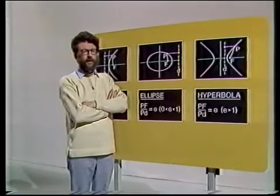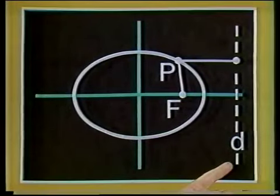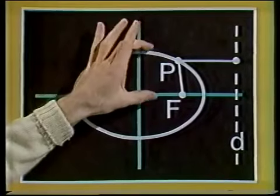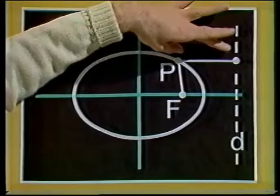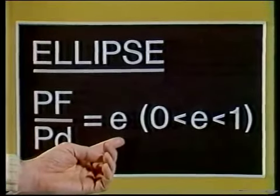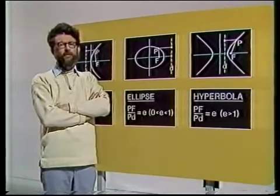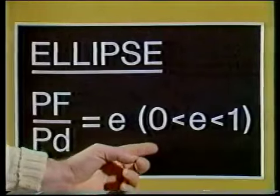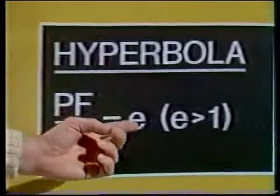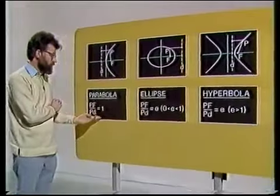They're all rather similar in a way. In each case, we have a fixed point F called the focus and a fixed line D called the directrix. The curve is the locus of a point P which moves so that the distance PF divided by the perpendicular distance from P to D is a constant. This constant E is known as the eccentricity. What distinguishes between the different cases is the range of values the eccentricity takes: between 0 and 1 gives an ellipse, greater than 1 gives a hyperbola, and exactly equal to 1 gives a parabola.